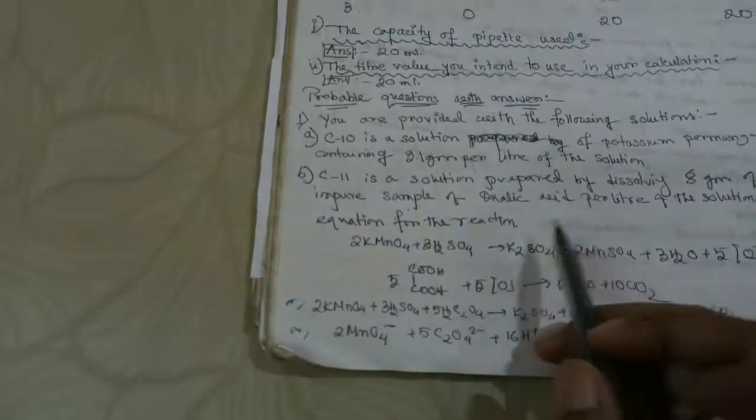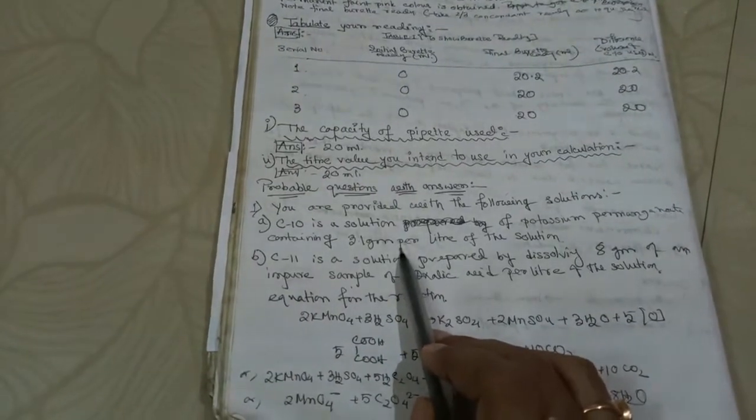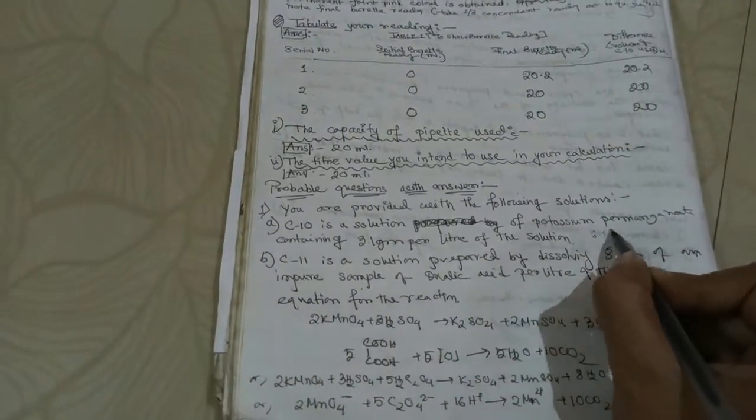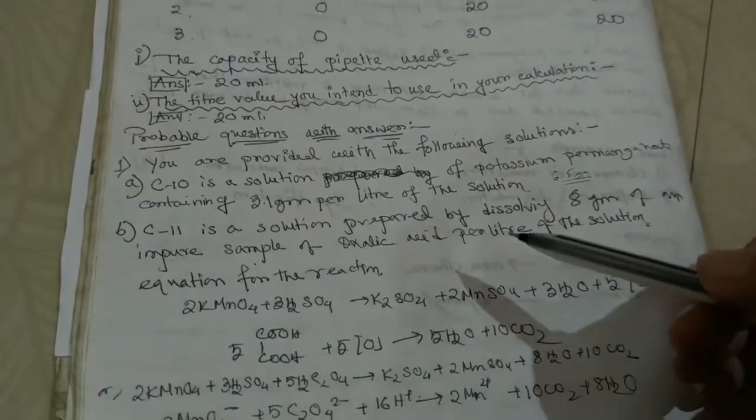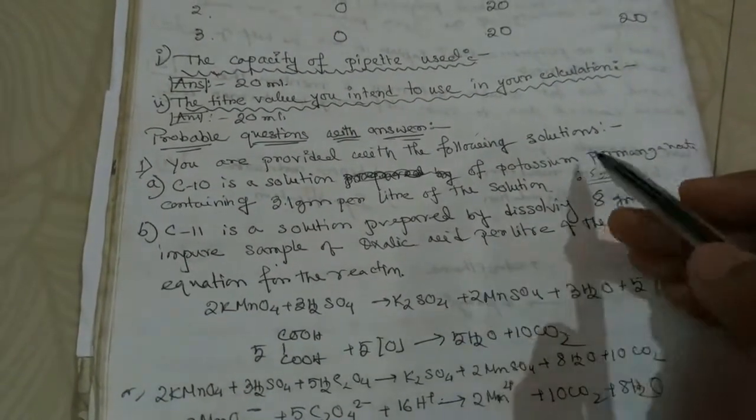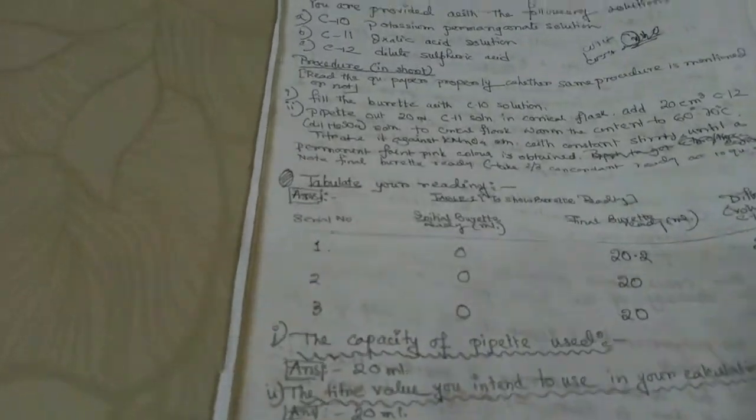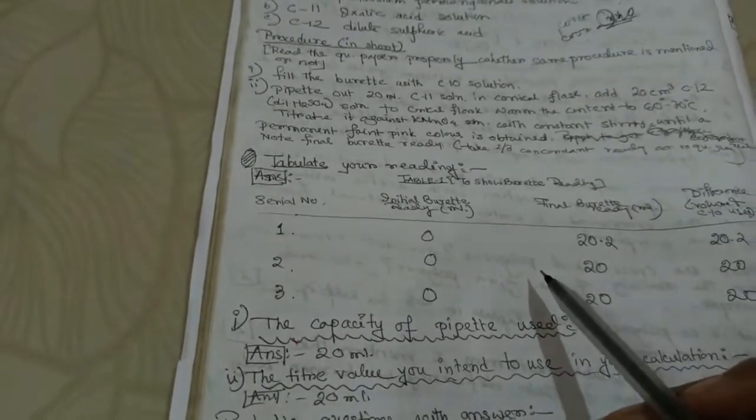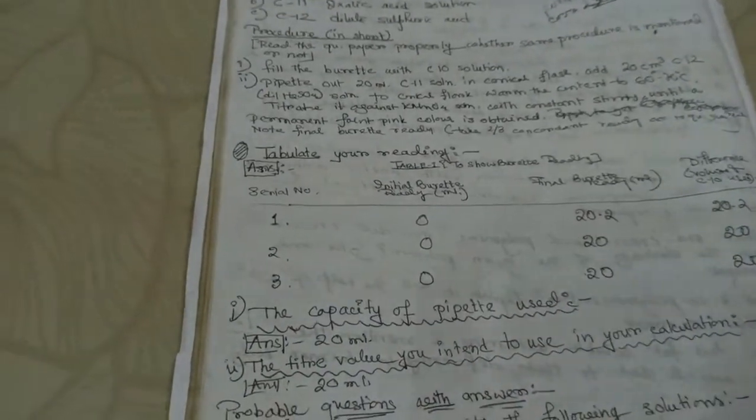Similarly today your target is: prepare permanganate solution 3.1 gram per liter as we took last day, but today instead of dissolving impure sample you will be considering 6.5 gram of pure sample of oxalic acid. Then your target will be to calculate molality for both C10 and C11 solution, and also gram per liter for C11 solution and the value of X. I hope you all can write the calculation because I gave how to solve X calculation in case of Mohr's salt. In the similar way you will be solving X calculation for this.